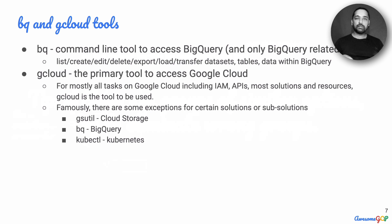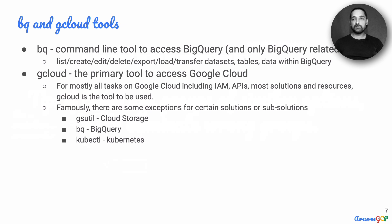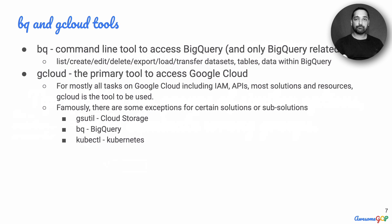What is gcloud then? gcloud is the primary tool to access the whole of Google Cloud itself. For almost all tasks on Google Cloud, including setting up virtual machines, setting up identity and access management, and to enable APIs, gcloud is the tool you have to use. There are also tools for certain sub-solutions: gsutil is primarily for Cloud Storage, bq for BigQuery, and kubectl is the command line to work with Kubernetes itself, not GKE.